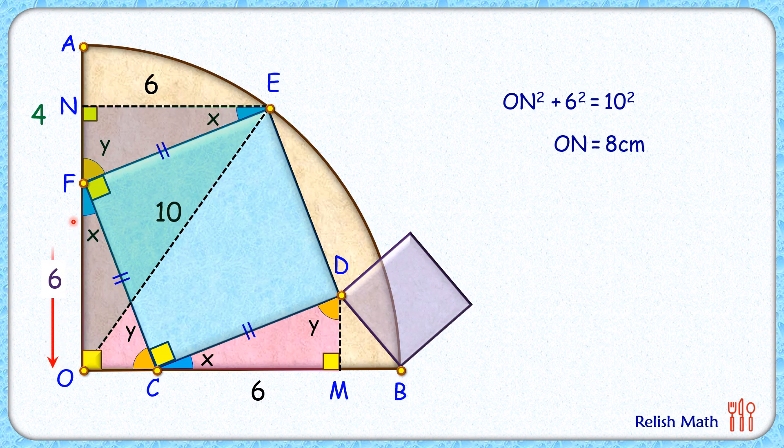Out of which OF is 6 centimeters, and thus remaining length FN will be 2 centimeters. But we have established earlier that these three triangles are congruent to each other, and thus the corresponding sides are equal. As NF is 2 centimeters, therefore OC length will be 2 and DM length will be 2 centimeters.